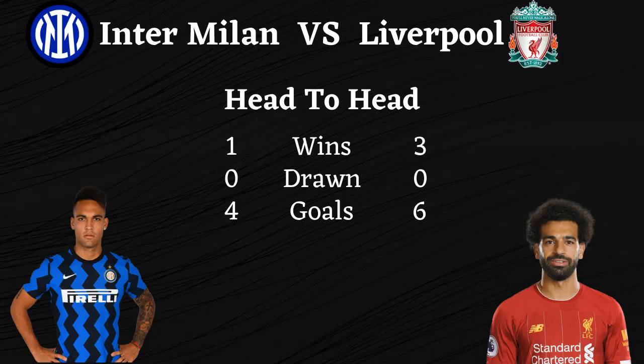Inter Milan vs Liverpool. Head to head — Inter Milan 1 win, Liverpool 3 wins, 0 draws. Goals scored: Inter Milan 4, Liverpool 6. Liverpool has won 6 Champions League titles, and Inter Milan has won 3 Champions League titles.